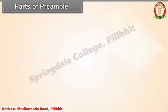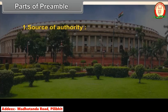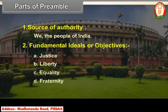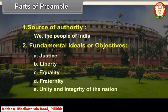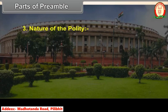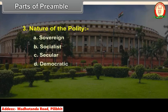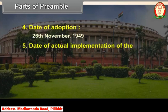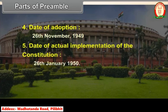Parts of the Preamble: 1. Source of authority — 'We the people of India.' 2. Fundamental ideals or objectives — Justice, Liberty, Equality, Fraternity, and Unity and integrity of the nation. 3. Nature of the polity — Sovereign, Socialist, Secular, Democratic, Republic. 4. Date of adoption — 26th November 1949. 5. Date of actual implementation of the Constitution — 26th January 1950.